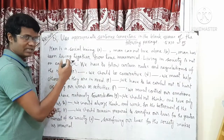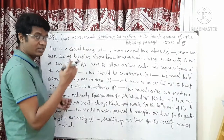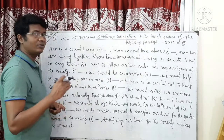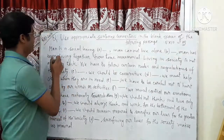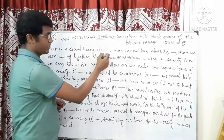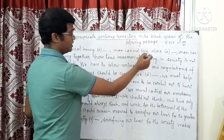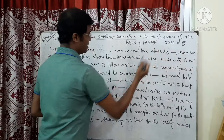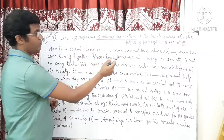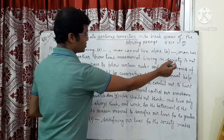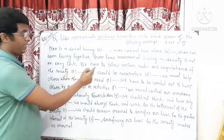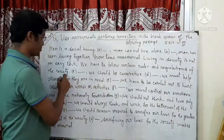I am going to translate into Bangla and we will try to find out the connections between two sentences or the ideas of sentences. Man is a social being. Man cannot live alone. Man has been living together for time immemorial. Living in society is not an easy task — we have to follow certain roles and relations of the society.